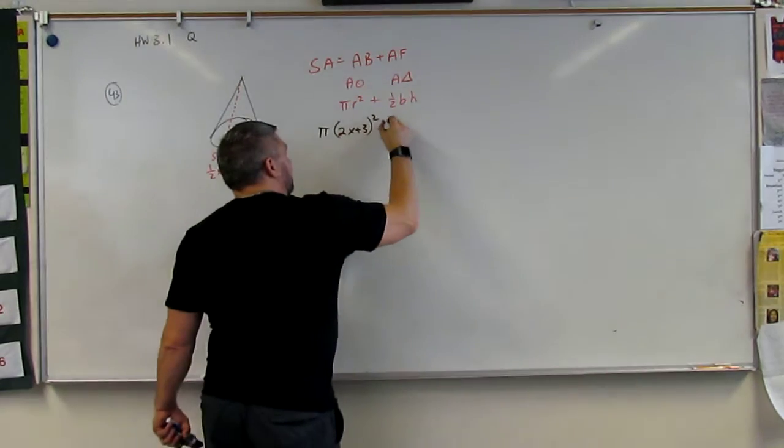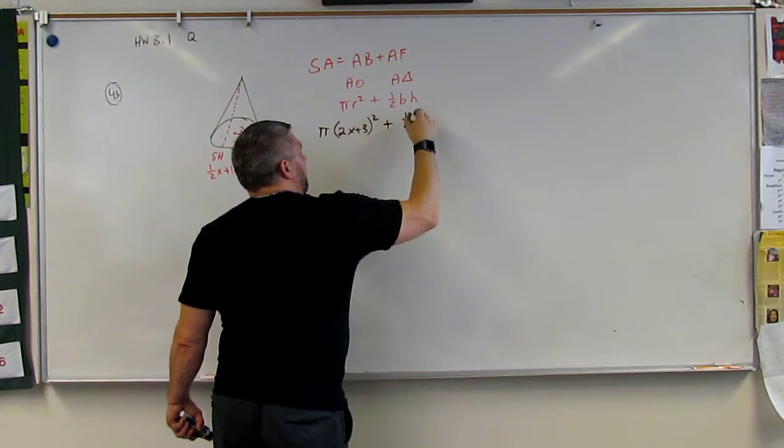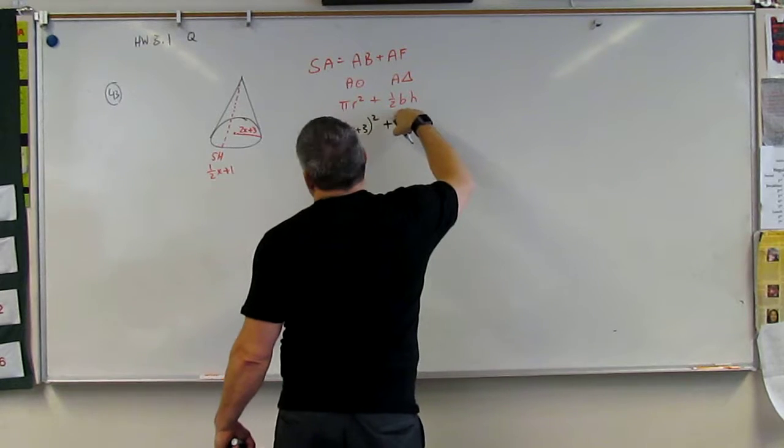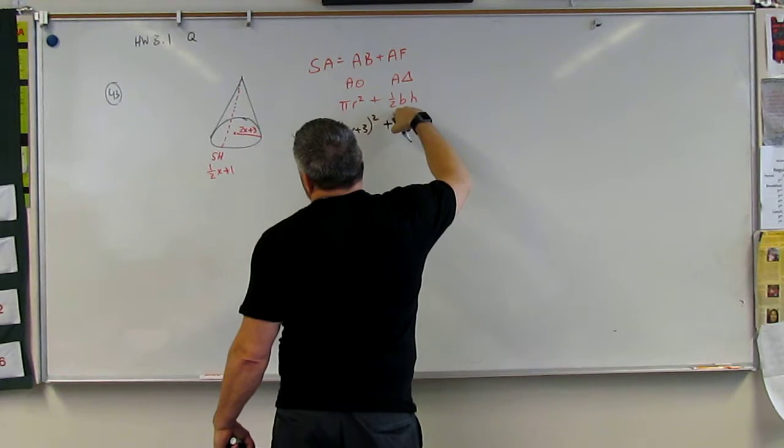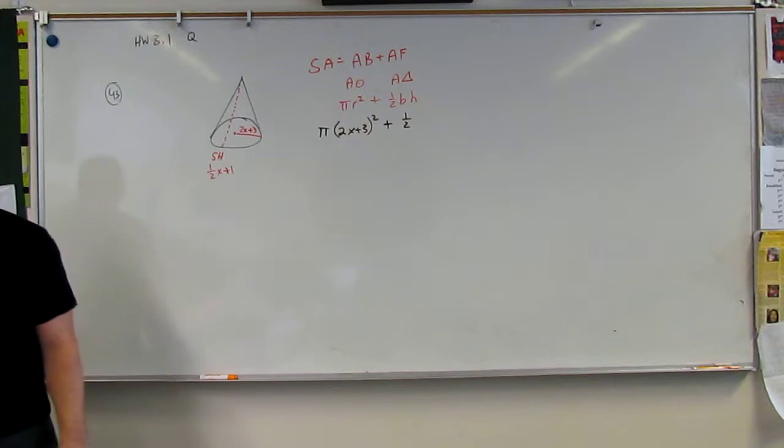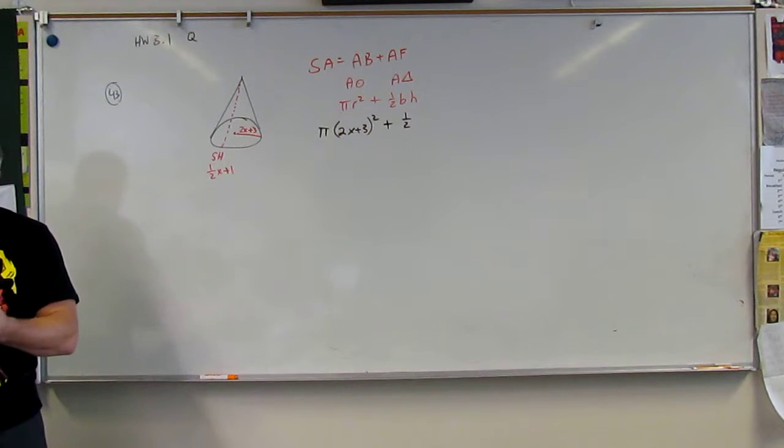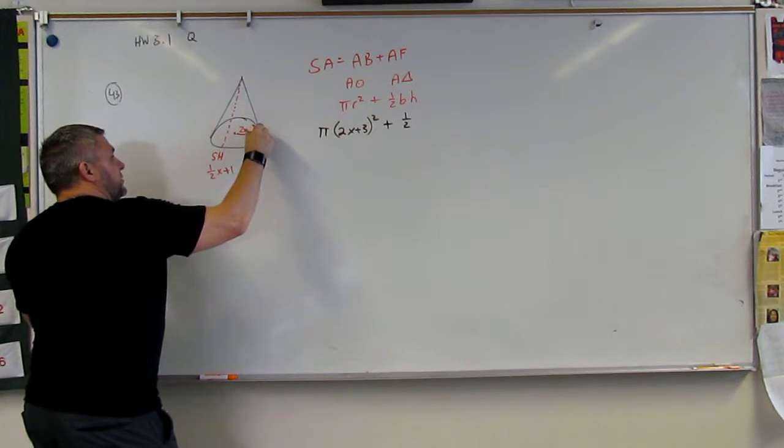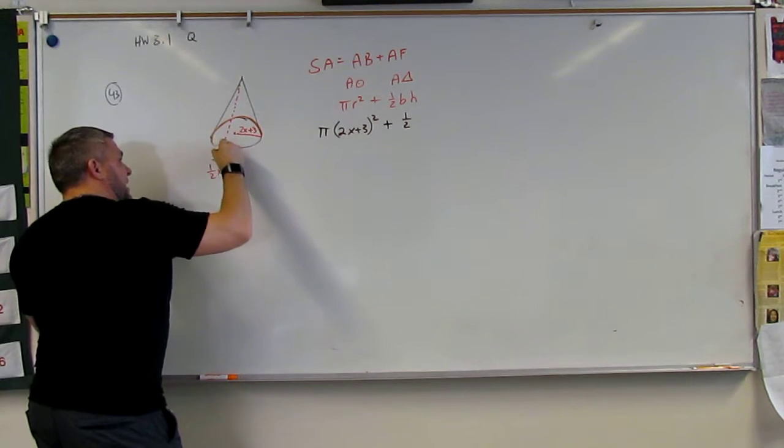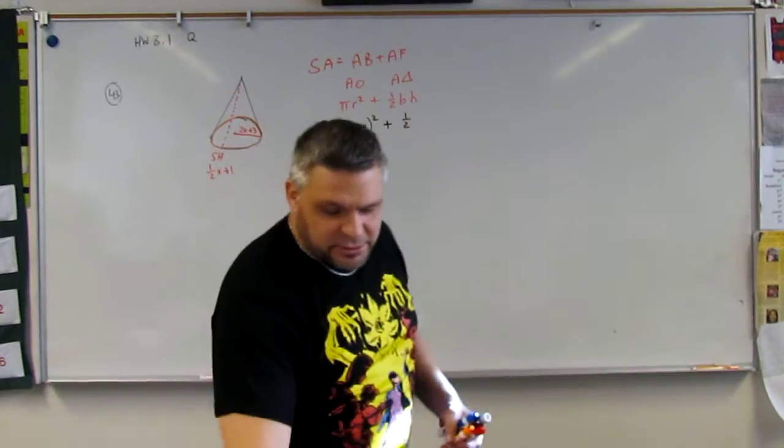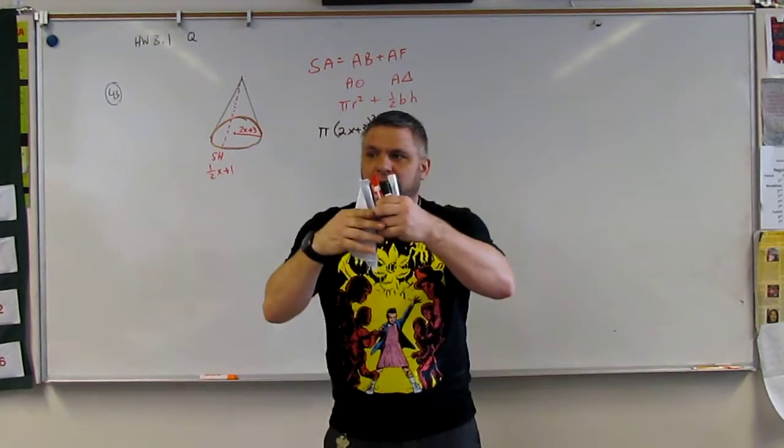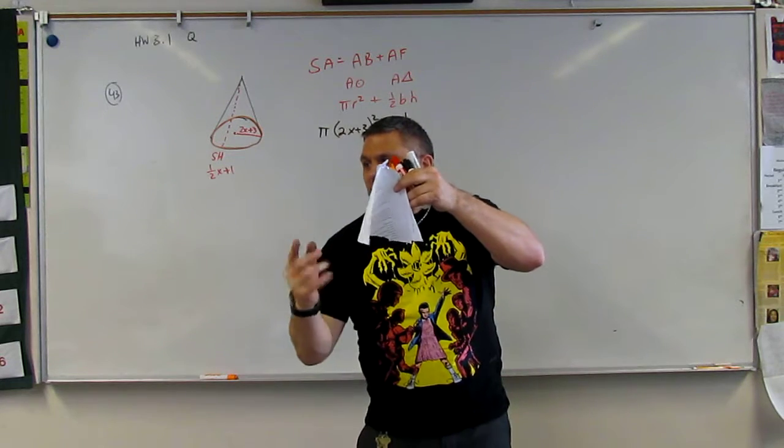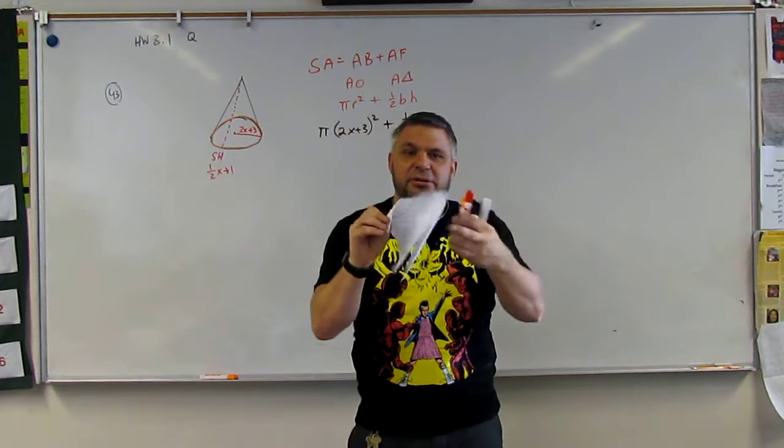Plus 1 half the base, and the base, what is the base of this triangle? That's the base. If we take a look at that triangle, it's the circumference of that circle. The base of that triangle is actually the circumference of the circle.